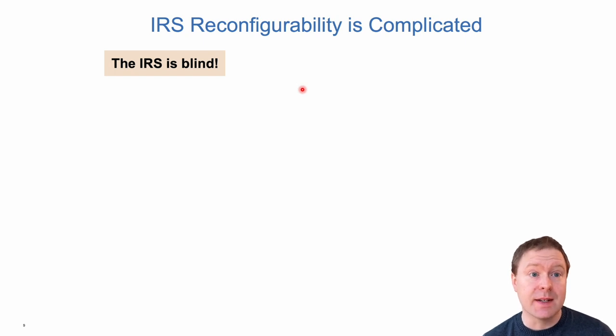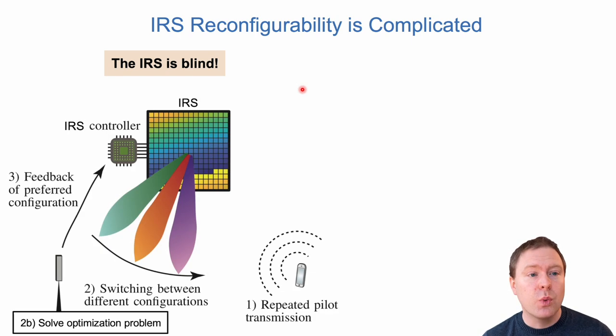Finally, configuring this IRS is something that is really complicated because the IRS is blind. We only see what is going through the mirror at the receiver point. The way of figuring out how to reflect things is essentially to let the user device send a known pilot signal. We let the IRS reflect it in different manners, switch through different things. The transmitter is measuring what we are getting at the receiver side, it computes an estimated channel, and then computes what would be a good IRS configuration. Depending on the propagation environment, these problems are much more complicated or easier to solve.